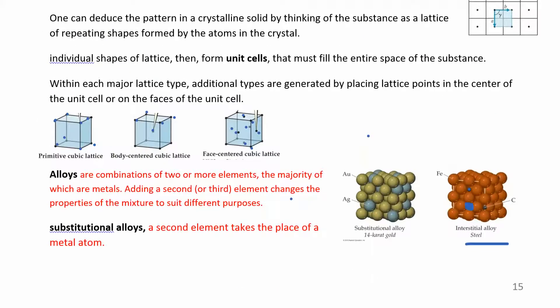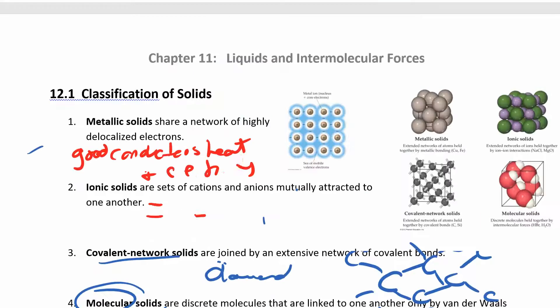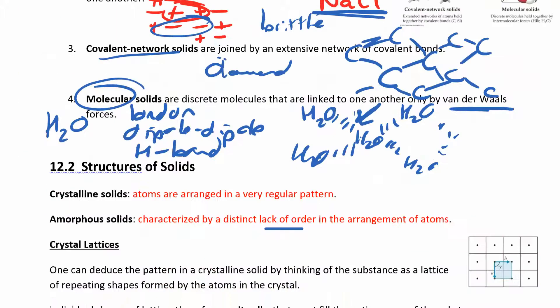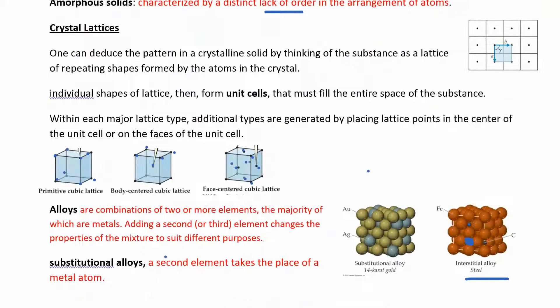So really quick on chapter 12, just be able to identify some of the different types of classification for solids. And then a little bit about alloys.